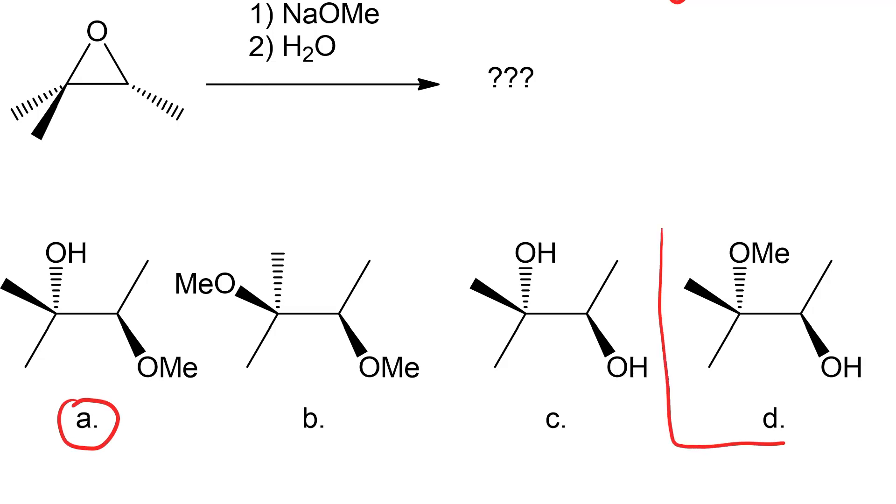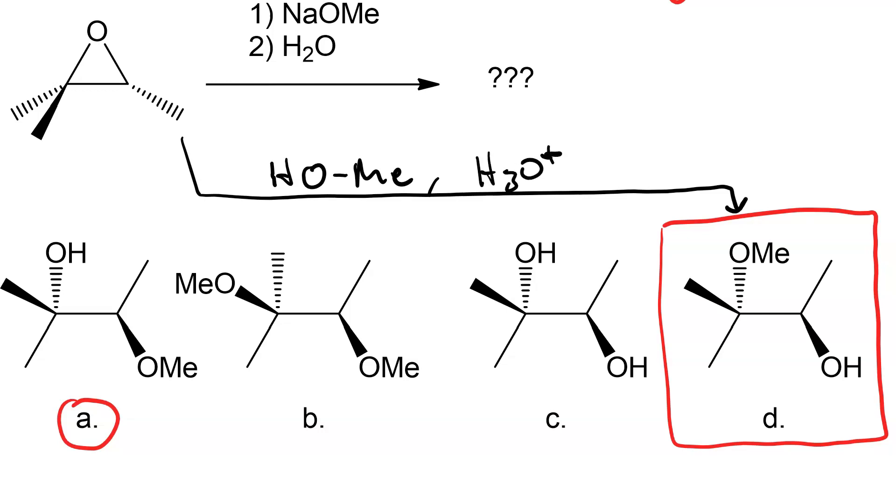Now, what if you wanted to get product T? You would use acidic conditions and methanol. So, methanol and hydronium would get us there.